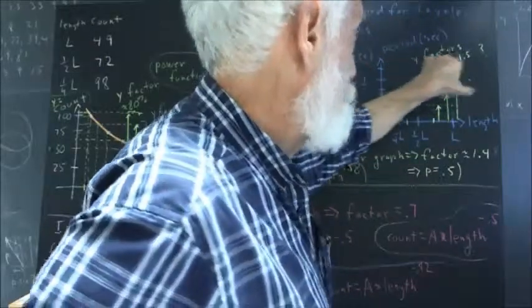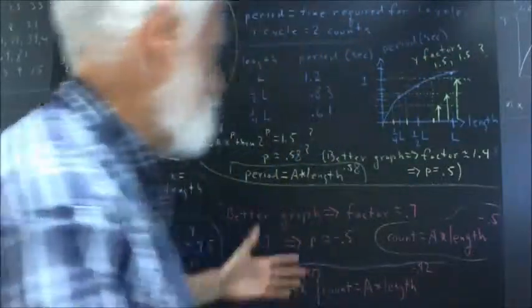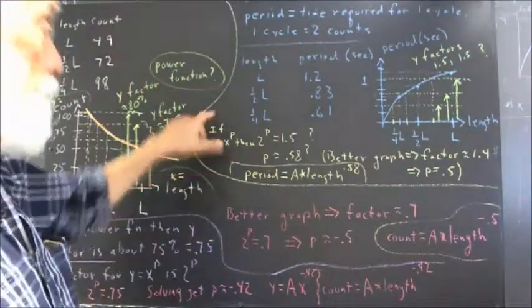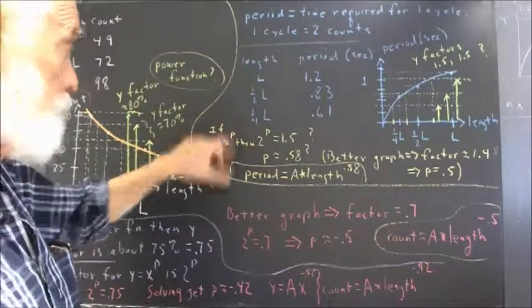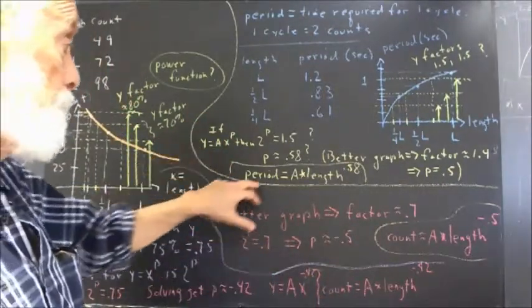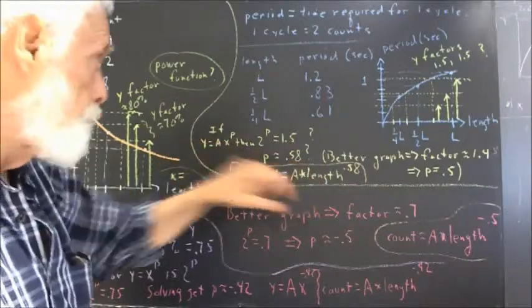And estimated the y factor to be about 1.5, an honest estimate based on what I saw. So, if y in this case is A x to the p, now, of course, this is going to be a different model than this one, because y is now going to mean period, x is still going to be length.